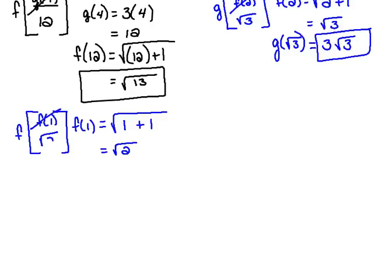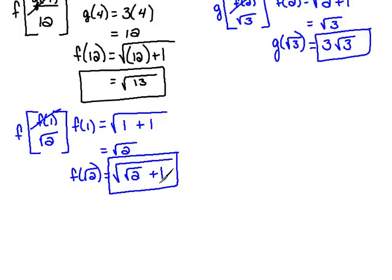I'm going to replace that now with the square root of 2. And now I'm going to evaluate the f function at the square root of 2. So that would be the square root of the variable plus 1. Now we really can't simplify that any further at least not nicely. So we're going to leave that as is.